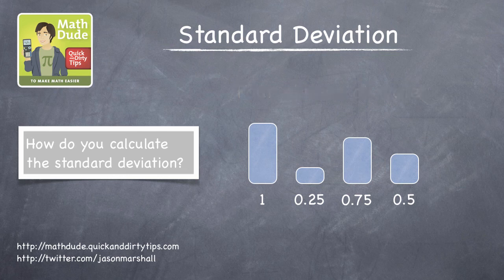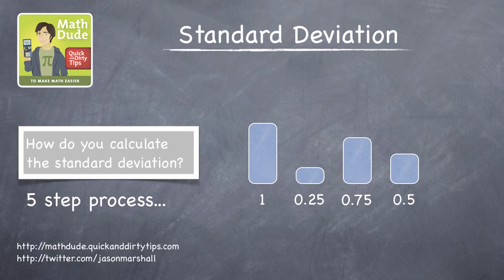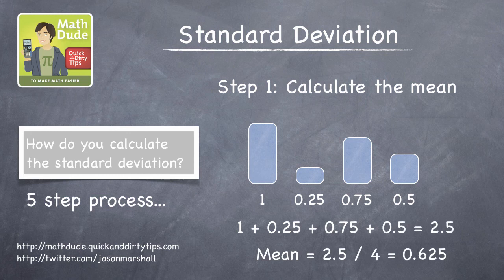Finding the standard deviation is a five-step process. Up first, you need to calculate the mean height of water, which in this case is 0.625.